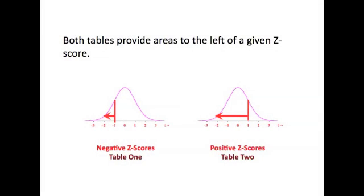To illustrate this graphically, observe these two curves. This curve has negative z-score values, and they will use table one, because those z-scores are to the left of the mean.